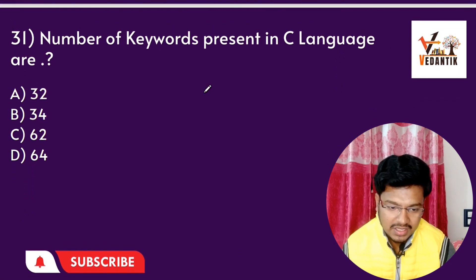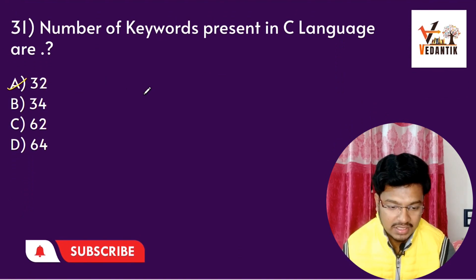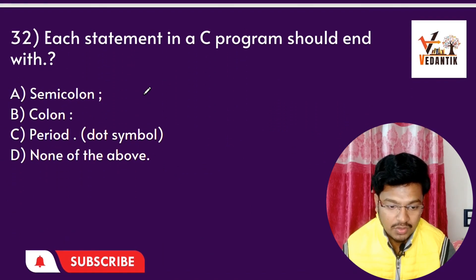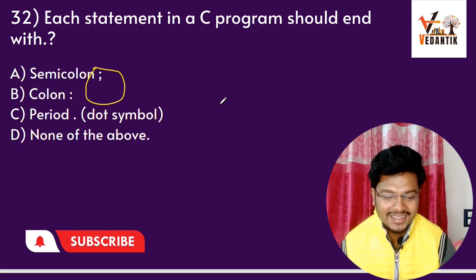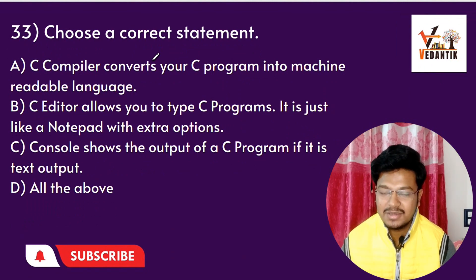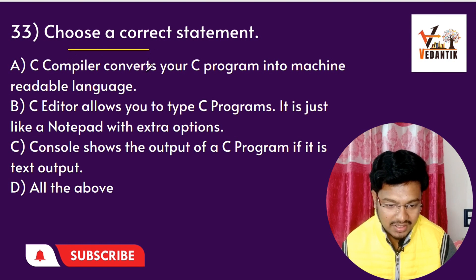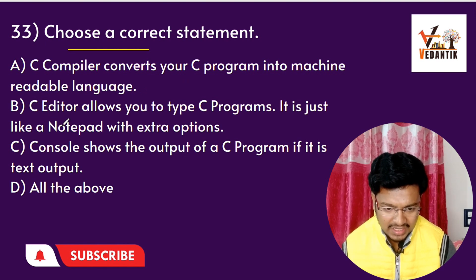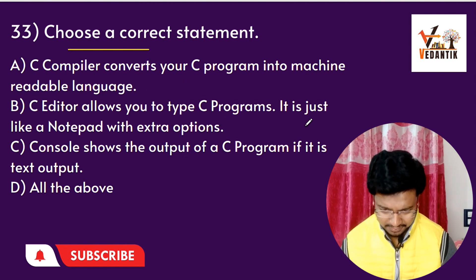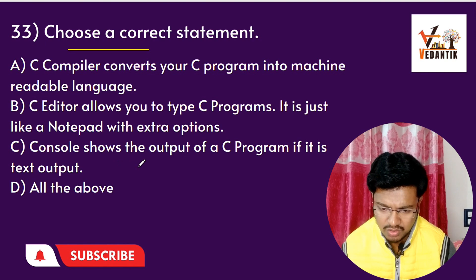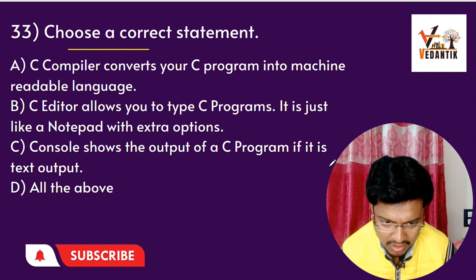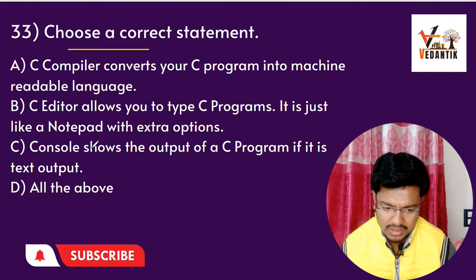Question 26: Number of keywords in C — 32. Question 27: Each statement should end with what? A terminator (semicolon). Question 28: Choose the correct statement — C compiler converts C program into machine readable language. C editor allows you to type C programs, just like a notepad with extra options. Console shows the output of the C program.